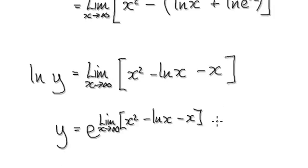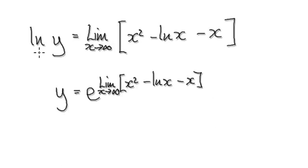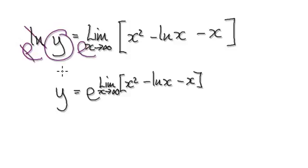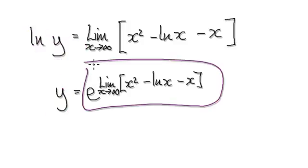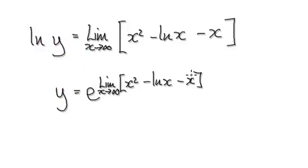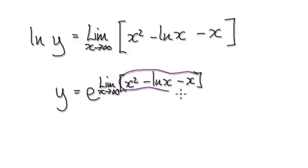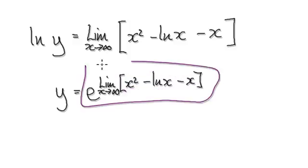Now, at this stage, exponentiate both sides — so e on the left, and e on the right. These two cancel each other out, leaving you with y. So the limit is really this expression here. It boils down to asking yourself: as x gets bigger and bigger, what would this thing be? So the limit is this expression here.